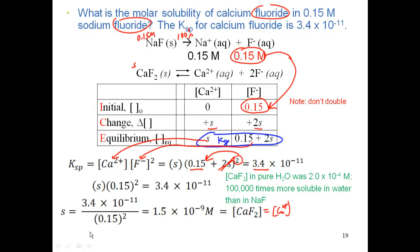Comparing to the previous problem: calcium fluoride in pure water had a molar solubility of 2.0×10⁻⁴ molarity, but now it's 1.5×10⁻⁹ molarity — calcium fluoride is about 100,000 times more soluble in water than in 0.15 M sodium fluoride. By adding sodium fluoride, we shifted the equilibrium far enough that solubility dropped dramatically. Homework 42 asks questions about common ion problems.